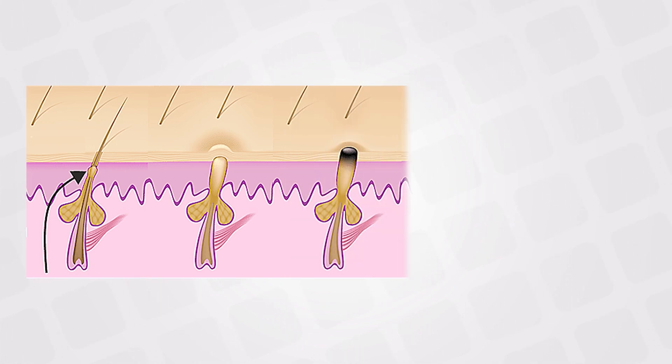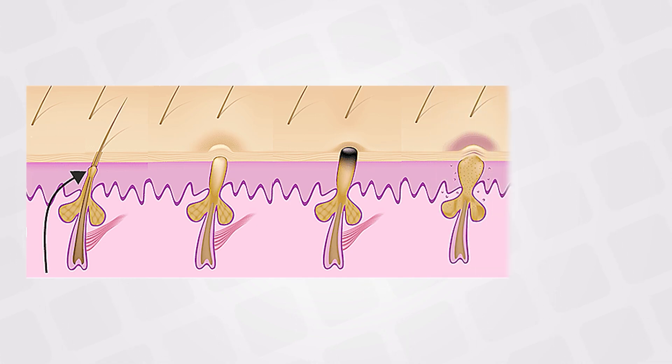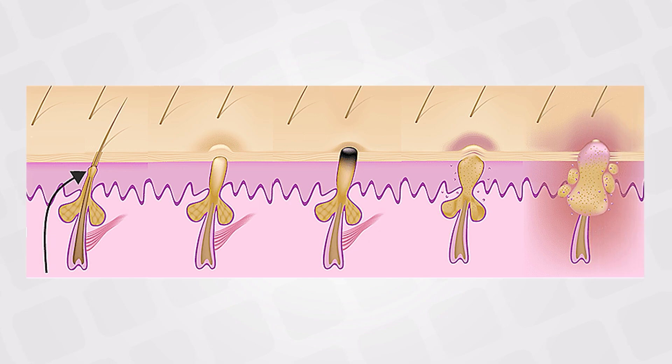So the stages are as follows. First, we have the plug, and then we have a whitehead, which we call a closed comedone. The closed comedone will be oxidized by air, and will form an open comedone, also known as blackhead. Then the inflammation will start by the bacteria and the pro-inflammatory mediators, and we will have a pimple, and finally a pustule or acne.